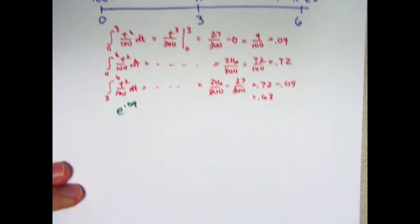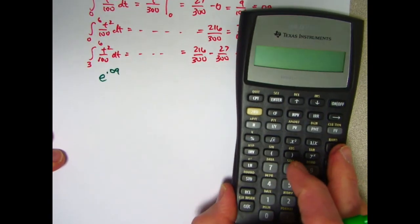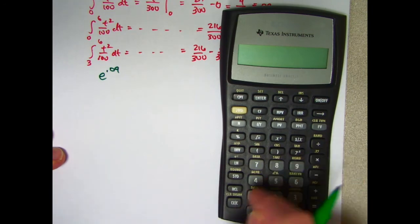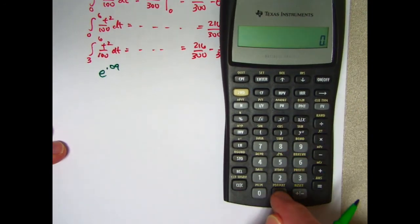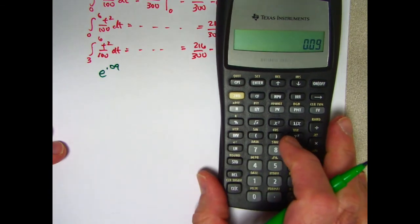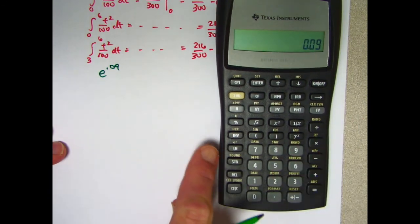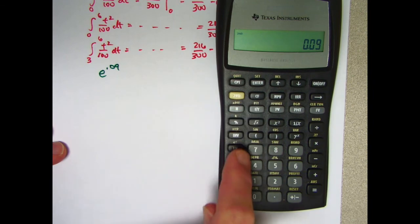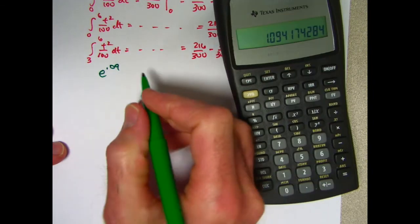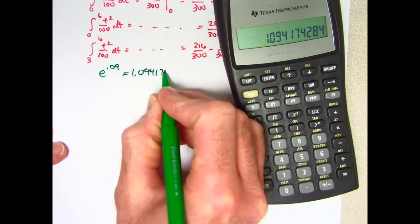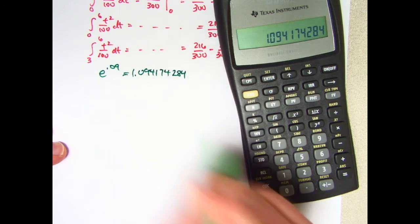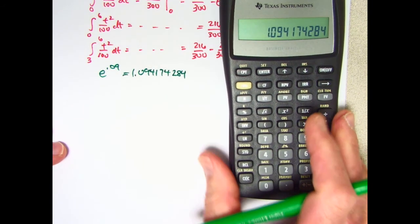So e to the integral from 0 to 3 is e to the 0.09. Type in 0.09. Then my e function is above the ln. I've got to use the second function key. e to the 0.09 is about 1.094174284, and I think I'll use all my decimals this time. I'm just playing it safe.